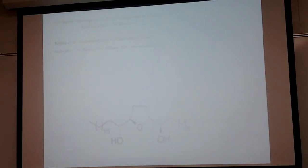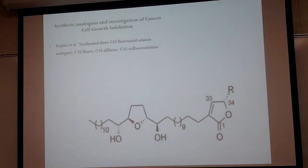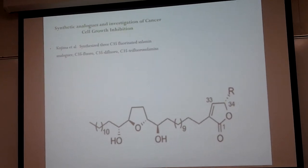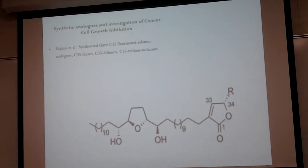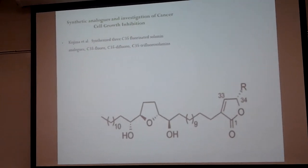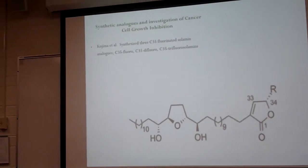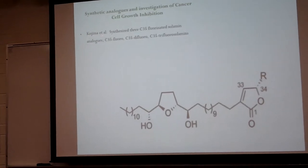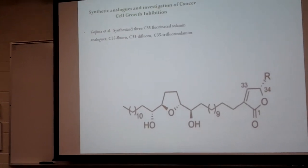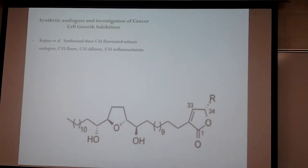Previously investigating the inhibiting effect on human cancer cell lines, researchers synthesized three C35 polyketide solamin analogs: the C35-monofluoro, the C35-difluoro, and the C35-trifluoro solamins.